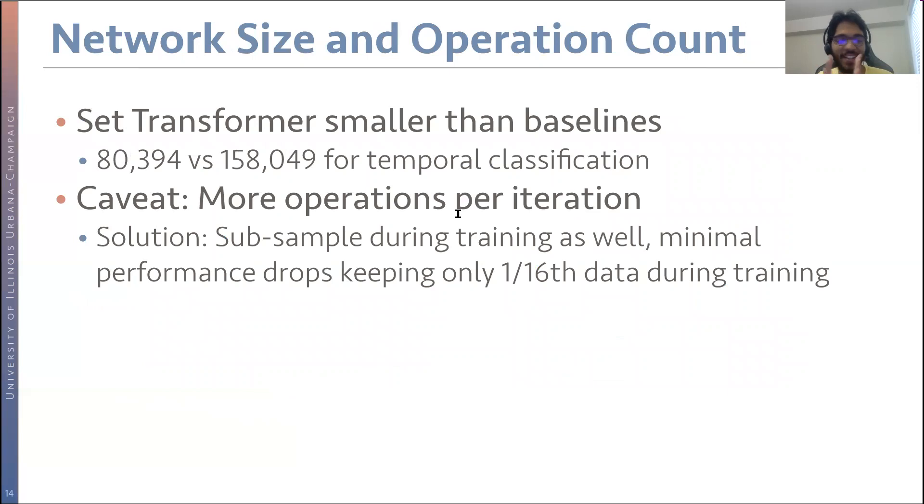Just another note to ensure that we have fair competition amongst all our models. By ensuring that the models perform similarly, we see that the set transformer actually has less number of parameters than the temporal baseline, almost half the number of parameters. With this half number of parameters, it's able to perform equivalently. But the caveat here is, even though the parameters are small, it has to perform more operations per iteration during training. So that actually increases the training time.